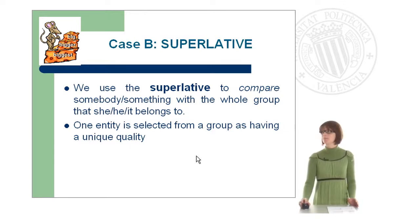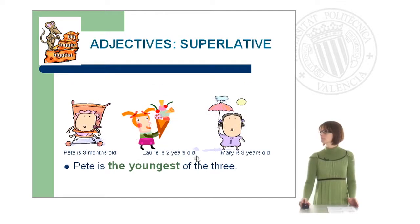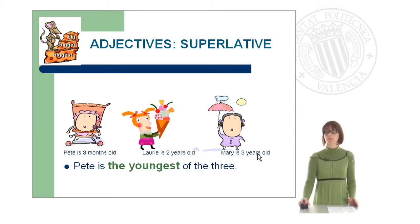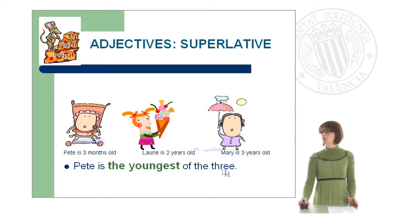Here we have Pete, who is three months old, Lori, who is two years old, and Mary, who is three years old. If we want to compare Pete with the rest of the children of the group, we would say Pete is the youngest of the three.